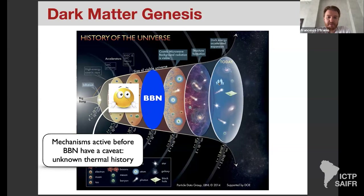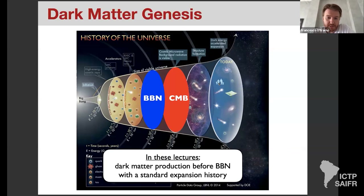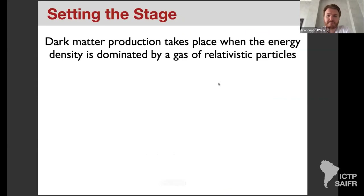That assumption is that the history of the universe is extrapolated back to times earlier than BBN in the way I will describe. We also know that dark matter must be around at the time of CMB formation — we observe the CMB and already have evidence that most of matter is non-baryonic. So whatever mechanism we consider must have done its job by then. In this lecture I will discuss production mechanisms active before BBN, assuming a standard expansion history.